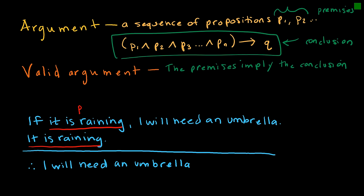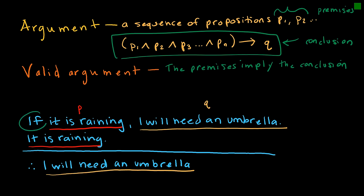So this is P. And let's let 'I will need an umbrella' be represented by Q. We have an if-then statement, so my first statement says: if P, then Q. My second statement says it is raining, so that's P. If P then Q means that if P is true, therefore Q is true. And then I tell you P is true — therefore, what is my conclusion? The three dots mean 'therefore,' so therefore Q is true: I will need an umbrella.